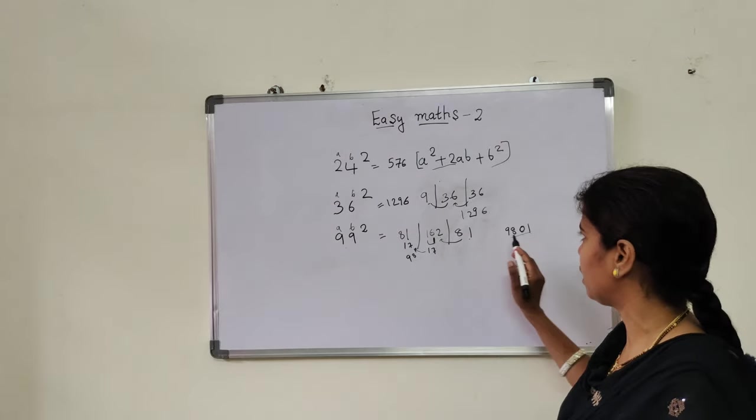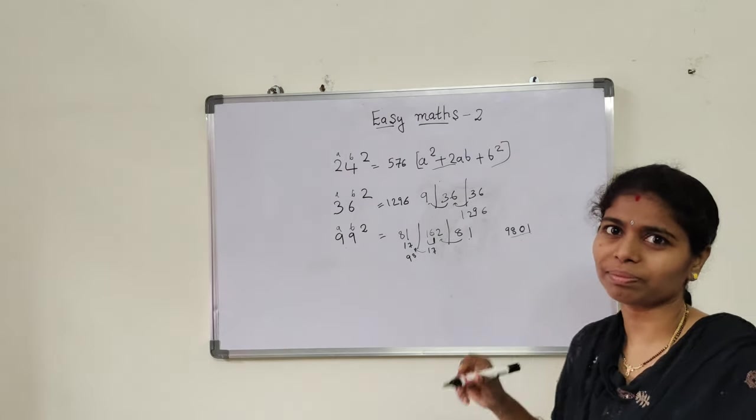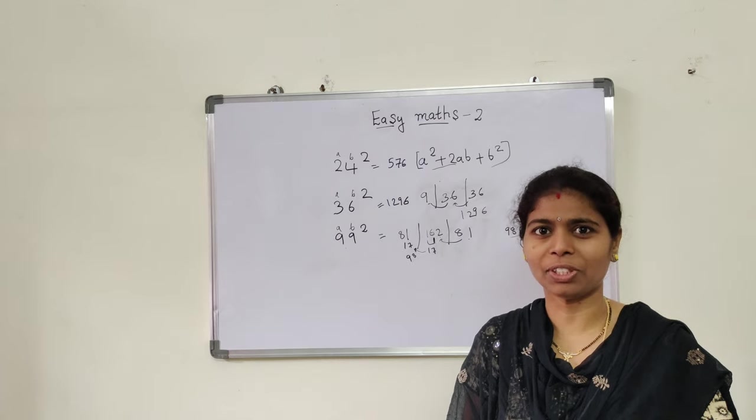And the square of 99 square is 9801. If you like my video, share my video. Thank you.